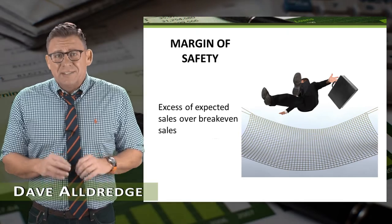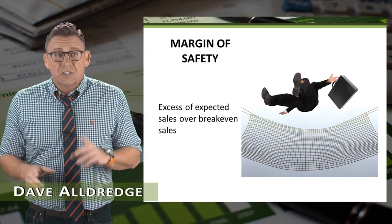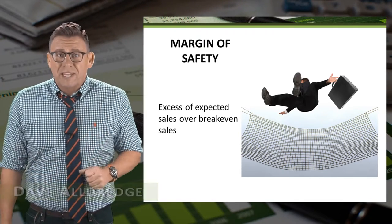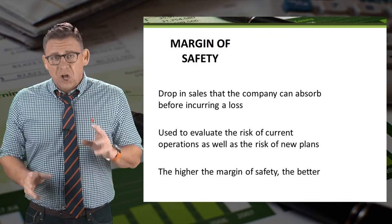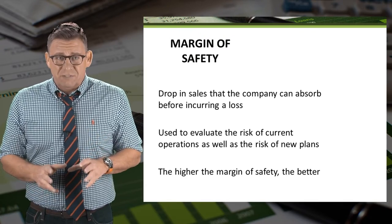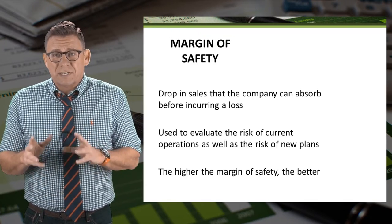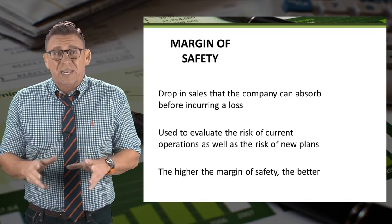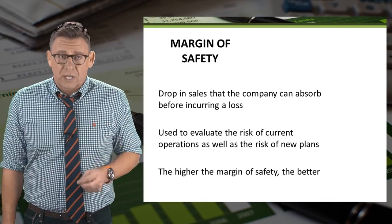Margin of safety is the excess of expected sales greater than break-even sales. It is called the margin of safety because it represents a drop in sales that the company can absorb before incurring a loss.